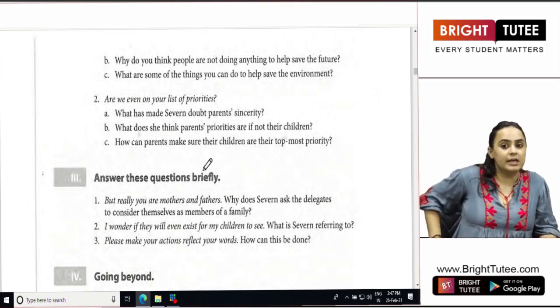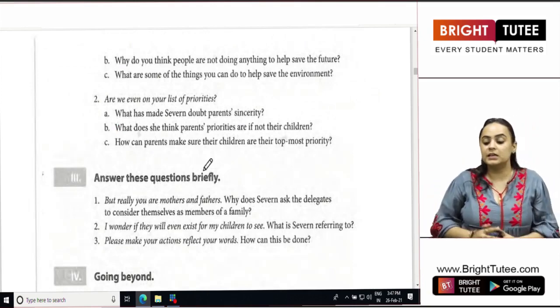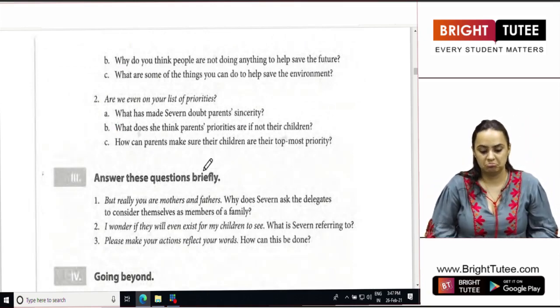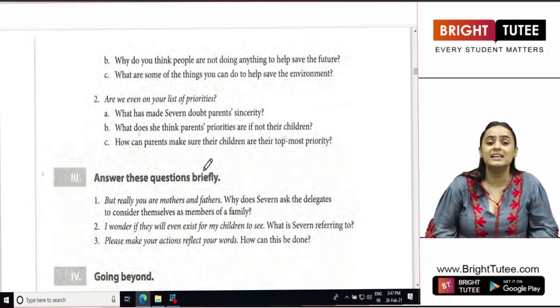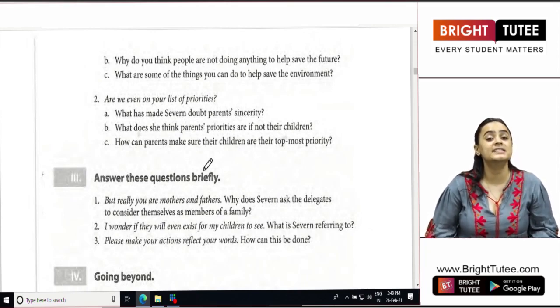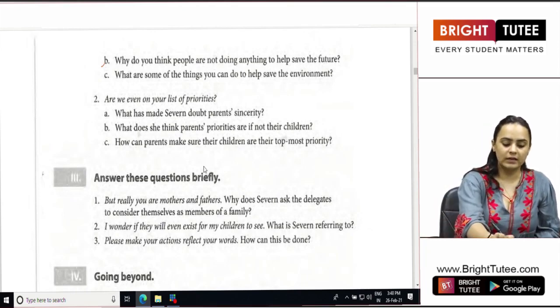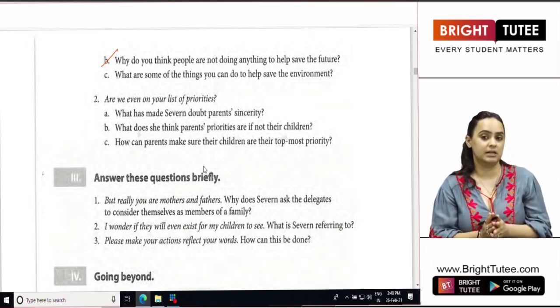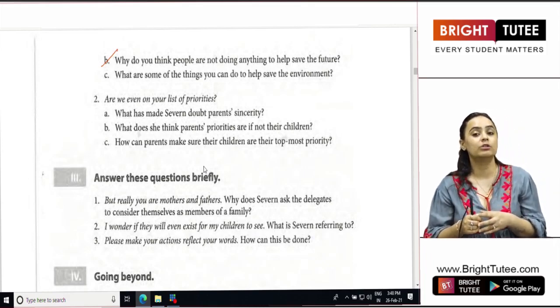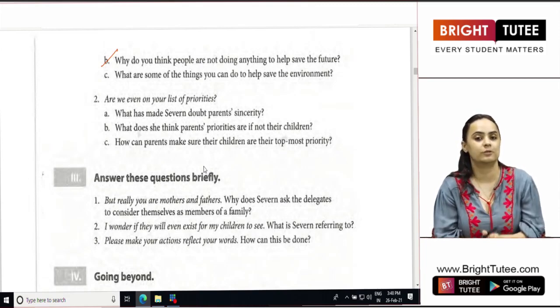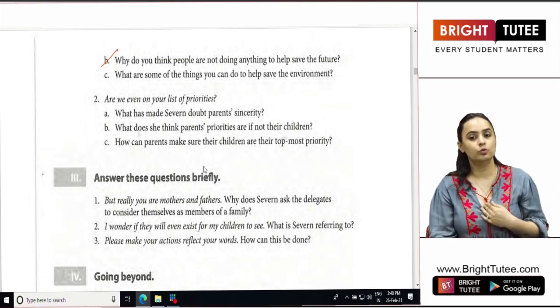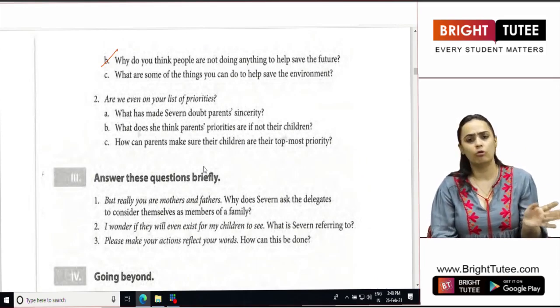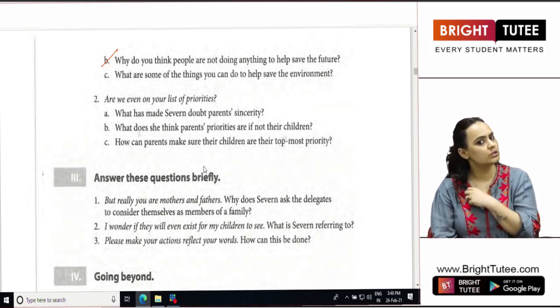Why do you think people are not doing anything to help save the future? Why are people not doing anything to save the future? Because according to Severn, the people are very greedy, they are very selfish, they are only thinking about themselves, about giving themselves the best of everything, not about the future generation who would be left with nothing at all if the same situation continues.